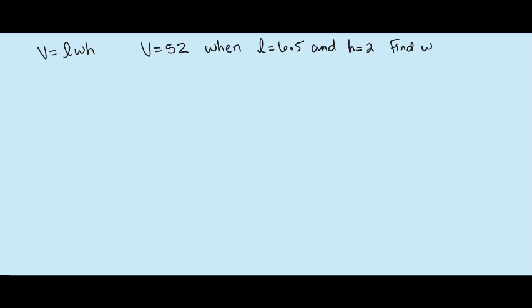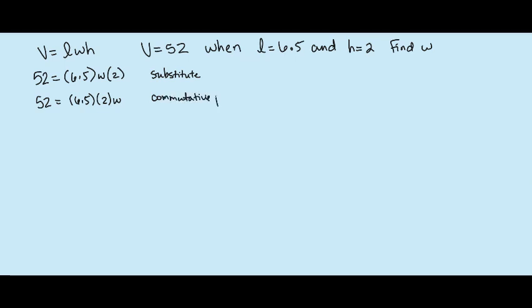The volume formula for a rectangular prism is Volume equals Length times Width times Height. They tell us the volume is 52 when the length is 6.5 and the height is 2, and we need to find W. Substituting gives us 52 equals 6.5 times W times 2. I'll rearrange using the commutative property of multiplication — the order doesn't matter — then multiply 6.5 times 2 to get 13.